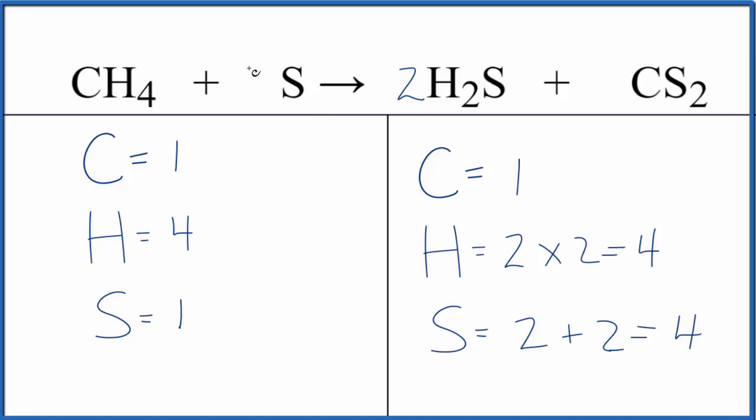And since sulfur is by itself, when we put a four here, one times the four, that'll give us four of those. It doesn't change anything else. We're done. This equation is balanced.